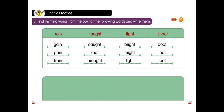Find the rhyming words from the box for the following words. Rain — rhyming words: gain, pain, train. Thought — rhyming words: caught, not, brought. Fight — rhyming words: bright, might, light. Shoot — rhyming words: boot, loot, root.